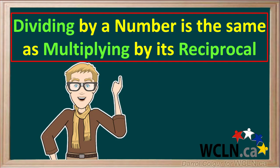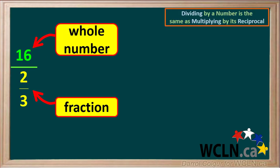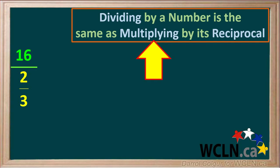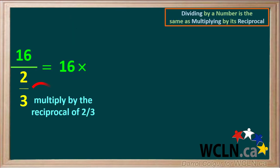So always remember, dividing by a number is the same as multiplying by its reciprocal. Let's try another example. This time we have a whole number 16 divided by the fraction 2 thirds. Remember, dividing by a number is the same as multiplying by its reciprocal. So we multiply the numerator 16 by the reciprocal of the fraction 2 thirds, which is 3 over 2.